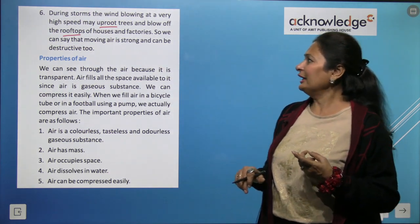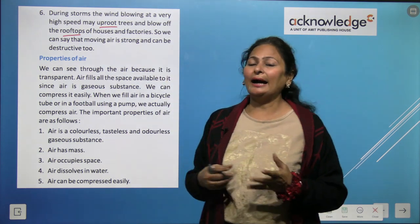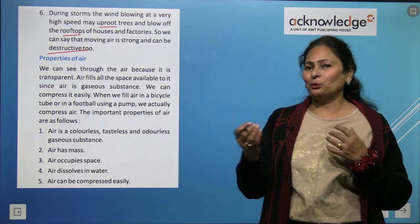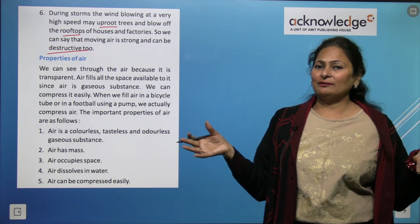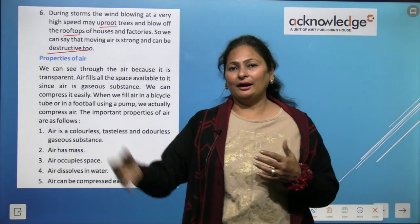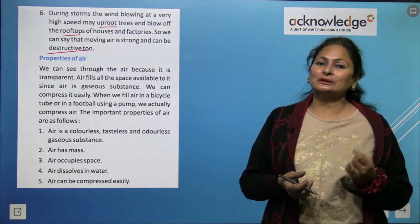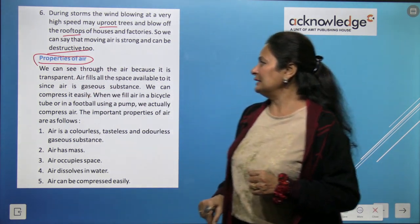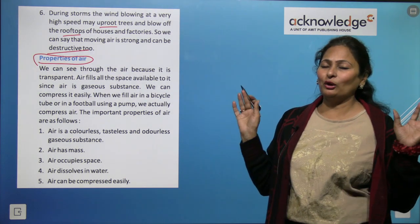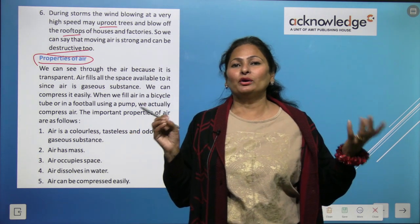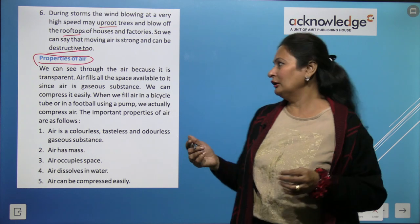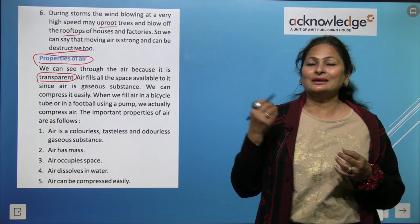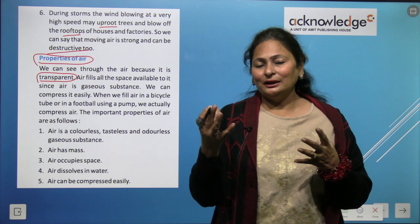Moving air is strong and can be destructive. Now, the properties of air: we can see through air because it is transparent — it allows light to pass through it, which is why we are able to see through it.